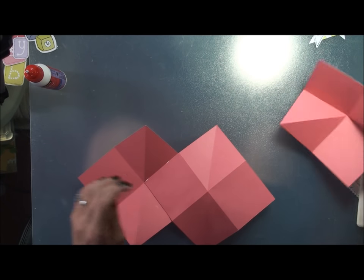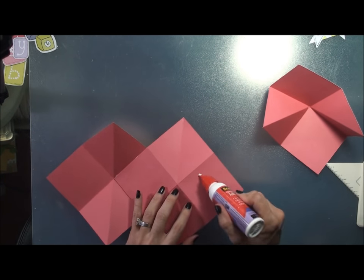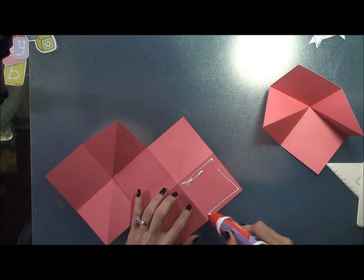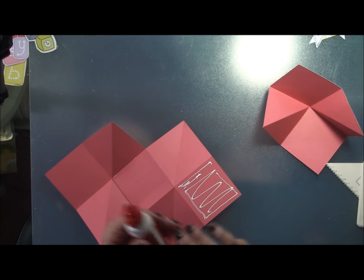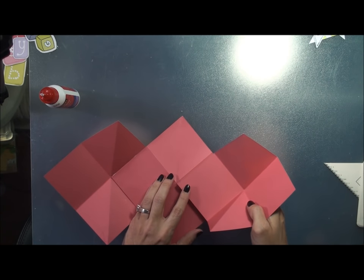Making sure that it's square on there. Okay then you're going to take your other piece and glue it to the other square.